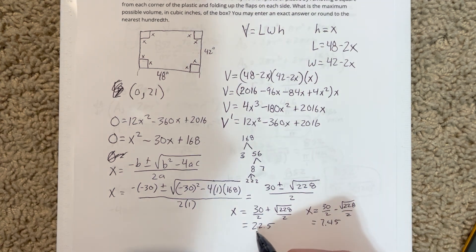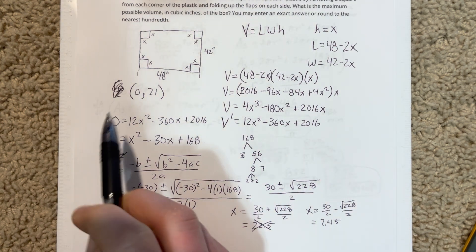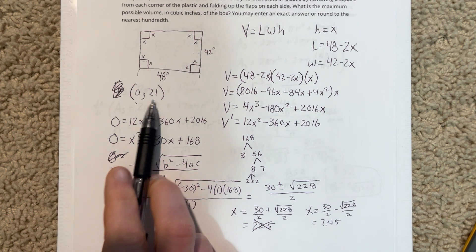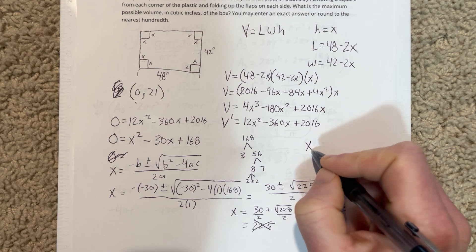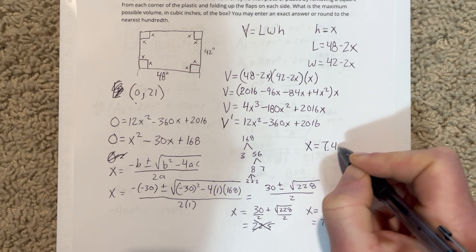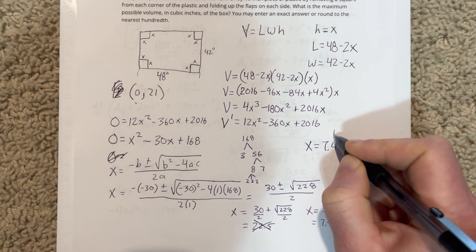So this one can't actually work because remember we're bounded by 0 to 21 here. So this 22.5, that's out of our domain. So 7.45 is our maximum for X. So we're going to say that X is going to equal 7.45 and that this is our maximum height for this thing.